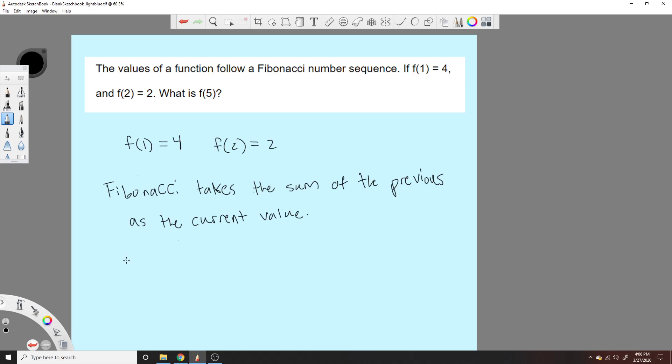To get f5 we need all the previous values, so we need f3. That's the next in line. Well, f3 is just f1 plus f2, which is 4 plus 2, which equals 6.